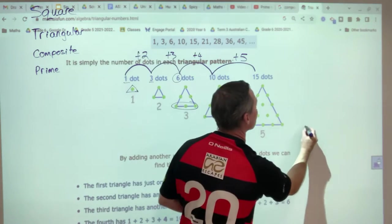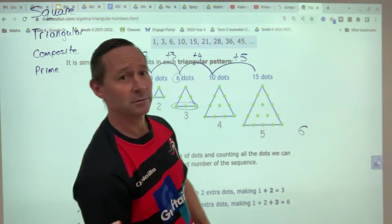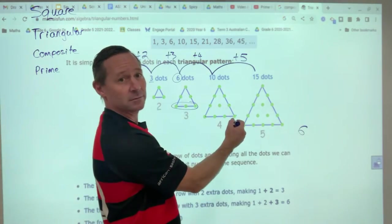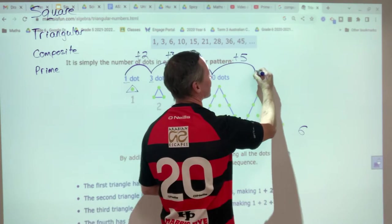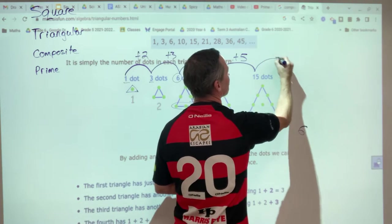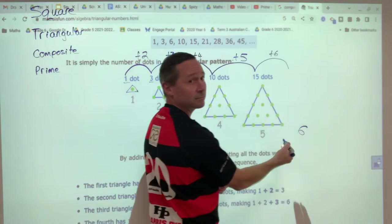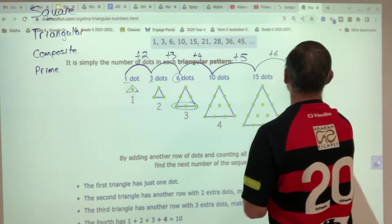I want to know what the sixth triangular number would be. You're going to plus six. So fifteen plus six would give me twenty-one.